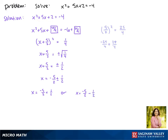Negative 5 halves plus 1 half gives us negative 4 halves, which gives us x equals negative 2 for one of our solutions. Negative 5 halves minus 1 half gives us negative 6 over 2, so our solutions are negative 2 or negative 3.